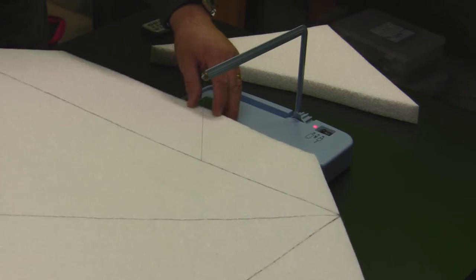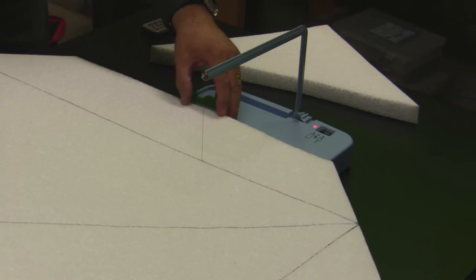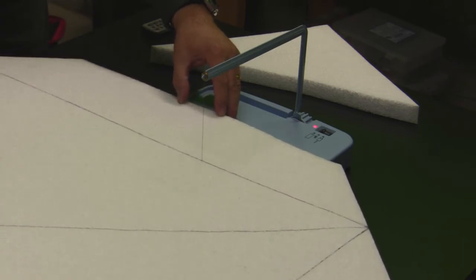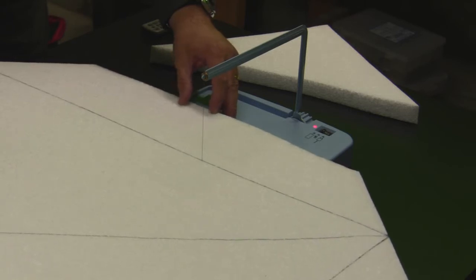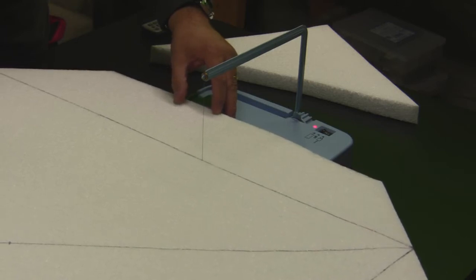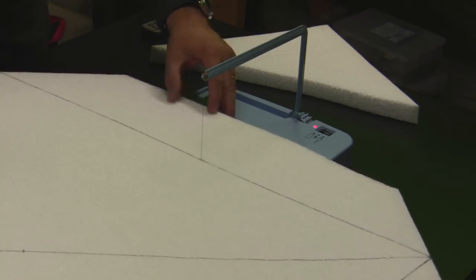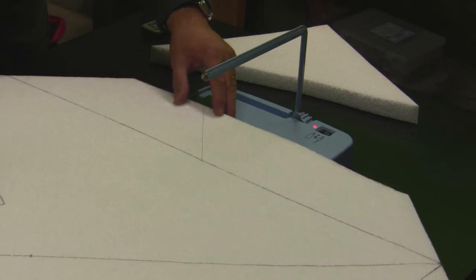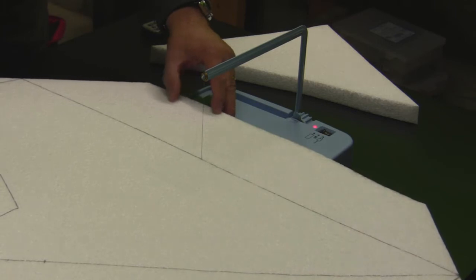You don't want to go too fast because then the wire starts to wander. If the line isn't 100% straight, you can always straighten it out with the sanding blocks or with the rasp if it's off by quite a bit.